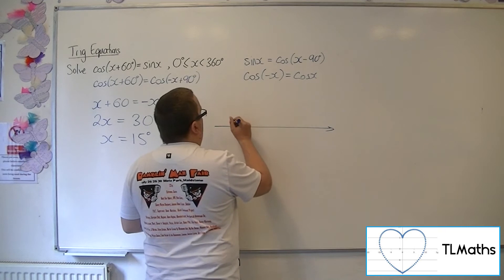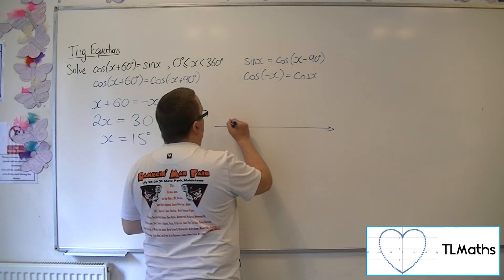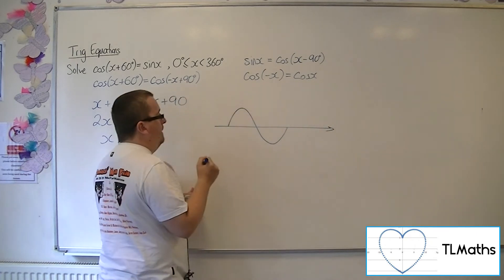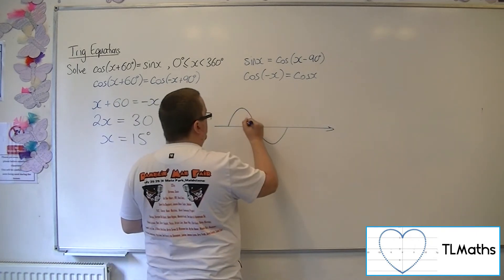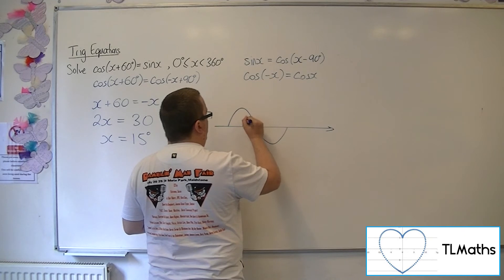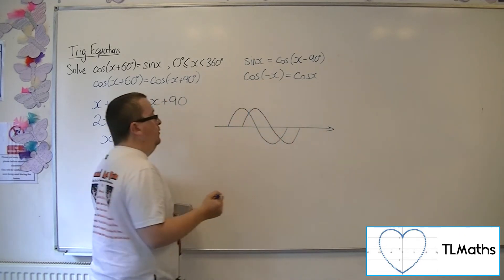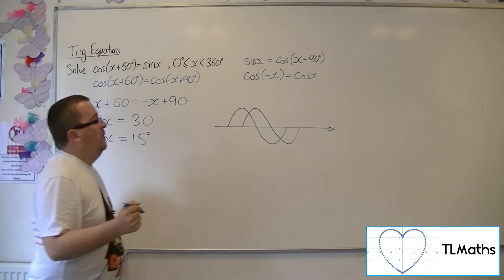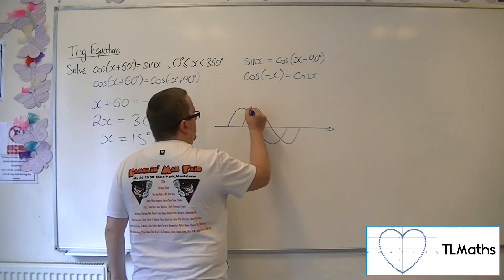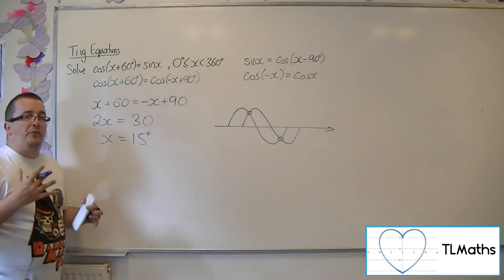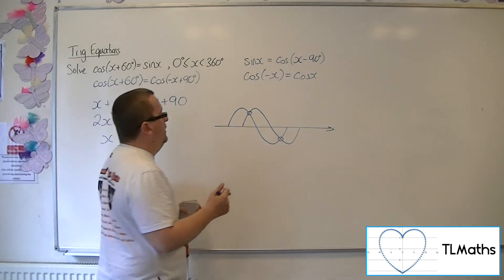If I had two curves, so here's one, and then I had a translated one like so, I'm only ever going to get two solutions, two crossings between 0 and 360.